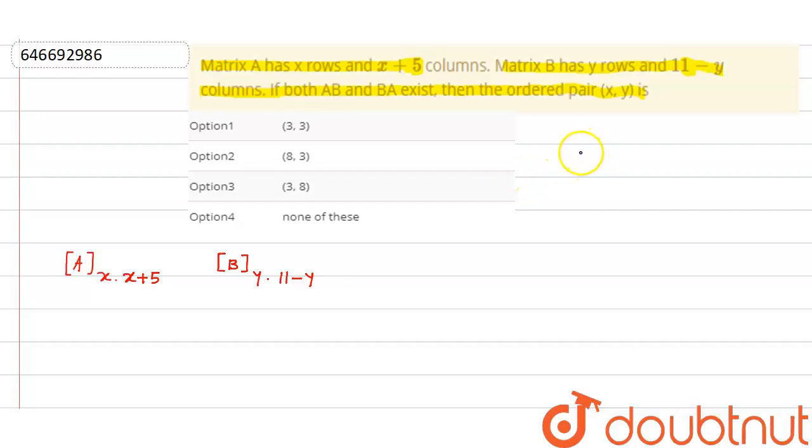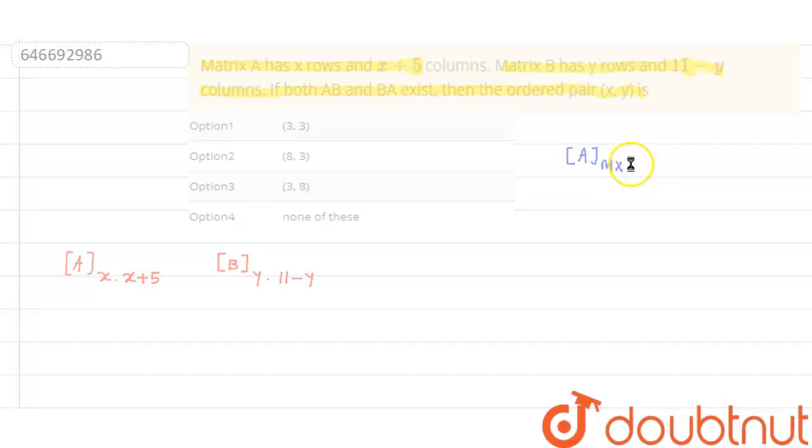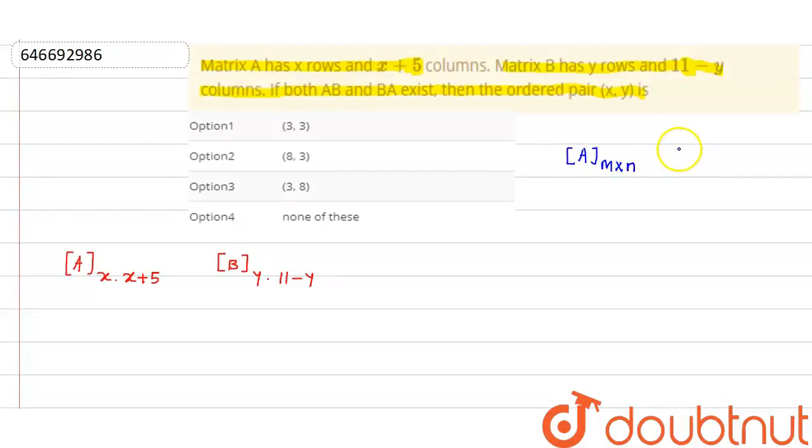Let's say you have a matrix A with order M by N, and another matrix B with order X by Y. When can we say AB exists? AB exists only when N is equal to X.